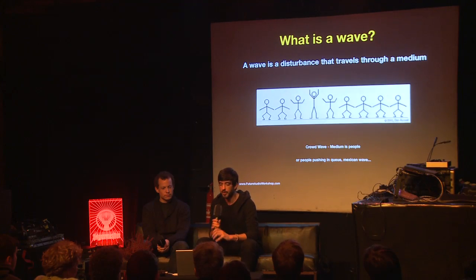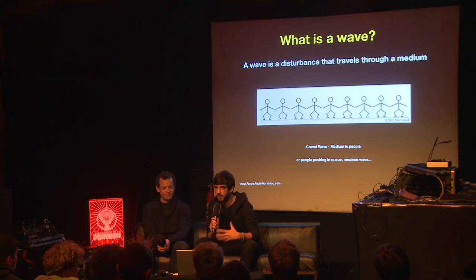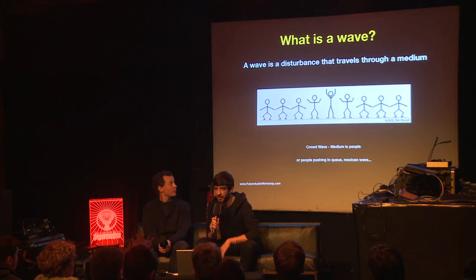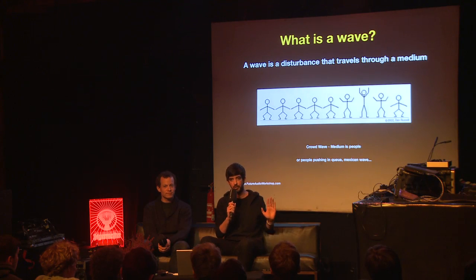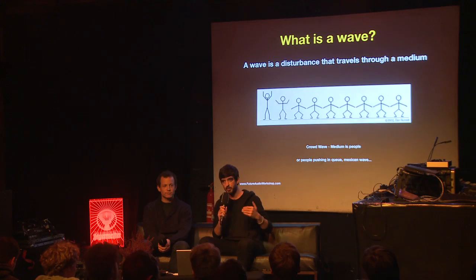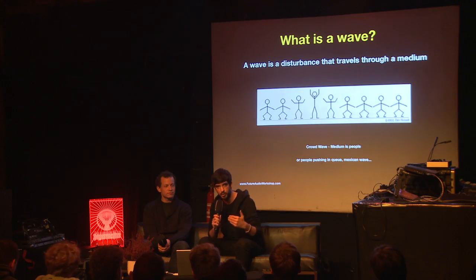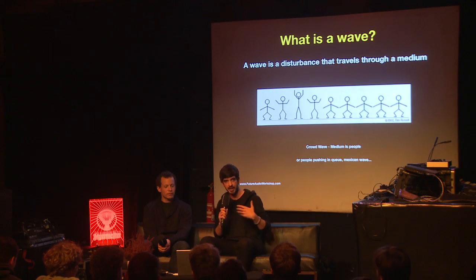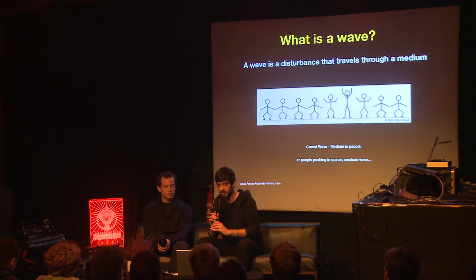The first thing I want to talk about is a wave. What is a wave? A wave is a disturbance that travels through a medium. As you can see on the screen, we've got some guys jumping up and down — like a crowd wave, or a Mexican wave. If someone at the back of a queue pushes, the wave traverses through the medium, which is the people. The people don't actually move anywhere — they just move forward and then back again. The wave travels through them, the medium.